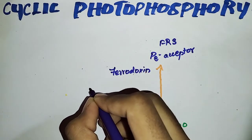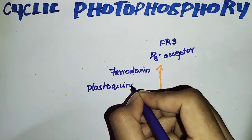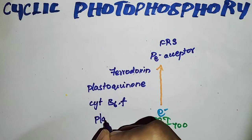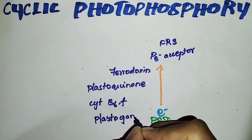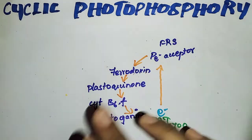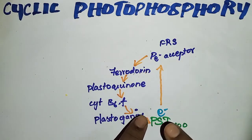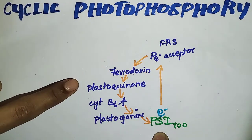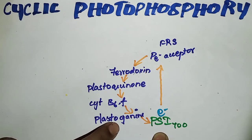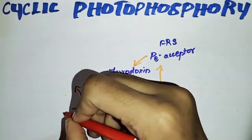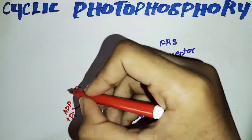Then it comes to plastocyanin, and then reaches the cytochrome complex B6 and F, then comes to plastocyanin again, and reaches back to PS1. See this path — the electron path is cyclic. Where it starts, it comes and ends back here. The electron excitation from PS1 reaches the primary electron acceptor, flows to ferredoxin, ferredoxin moves the electron to plastocyanin, through cytochrome B6F and plastocyanin — these are the electron carriers. While reaching this cytochrome complex, we get one ATP — ADP plus inorganic phosphate gives one ATP.